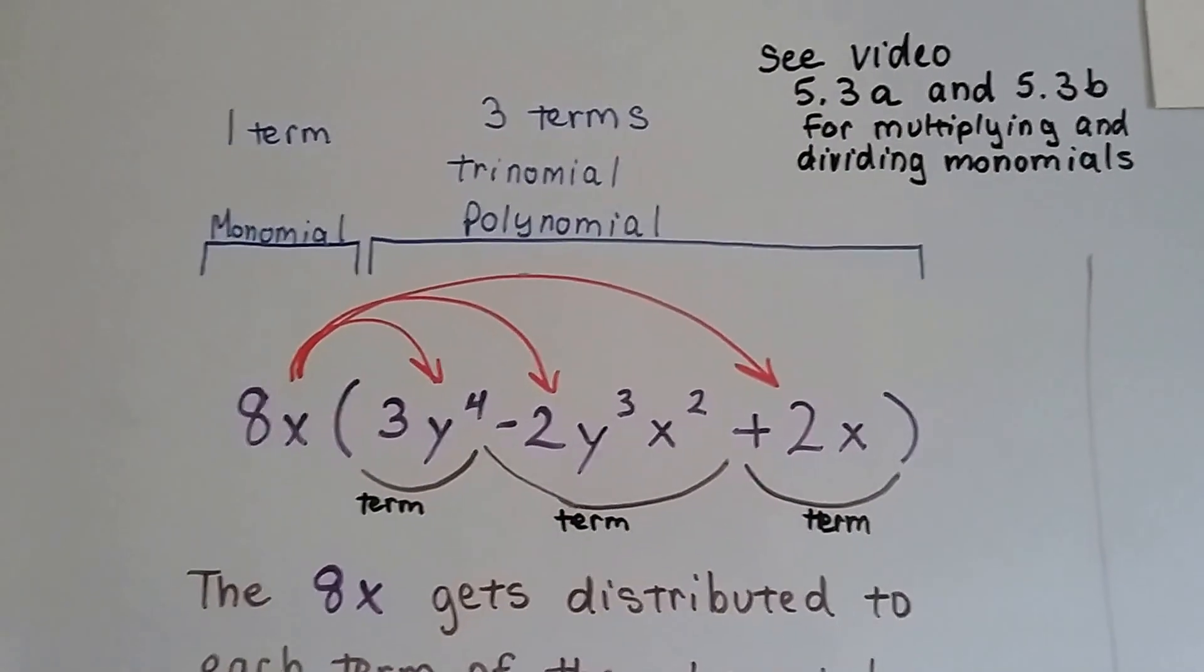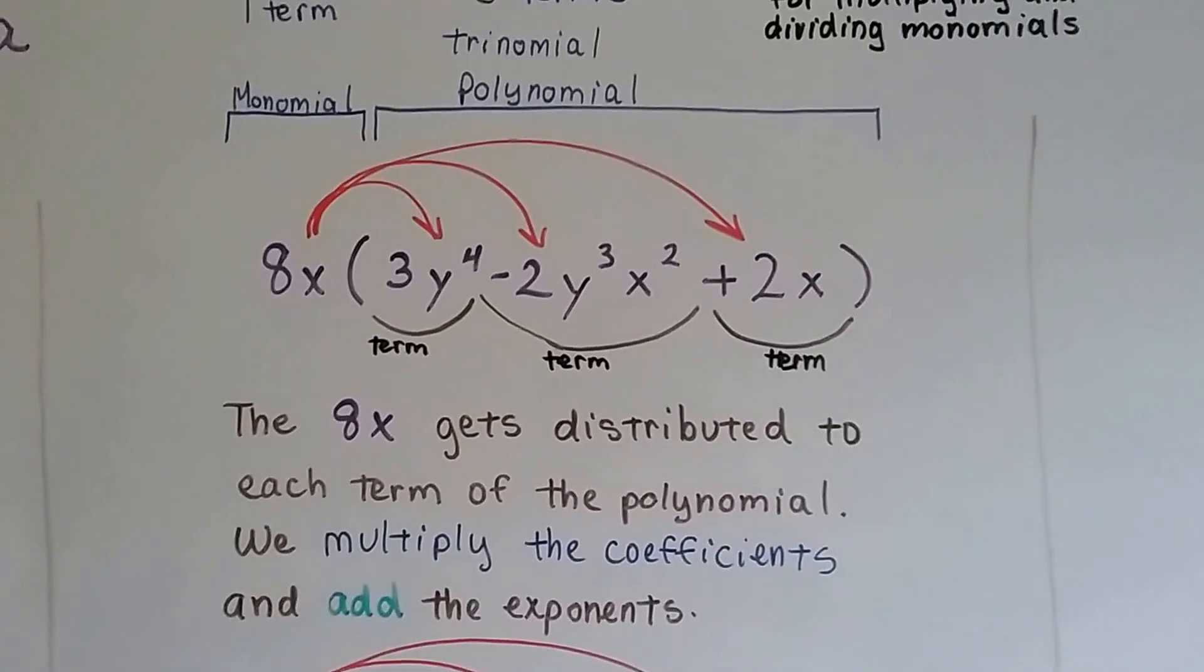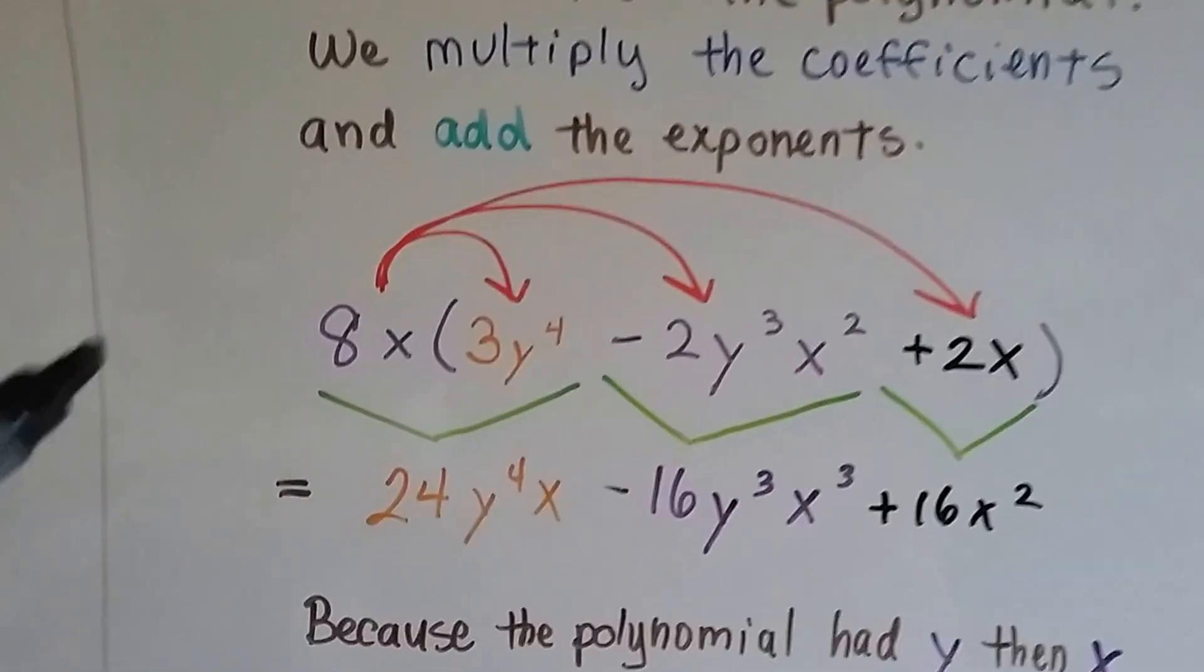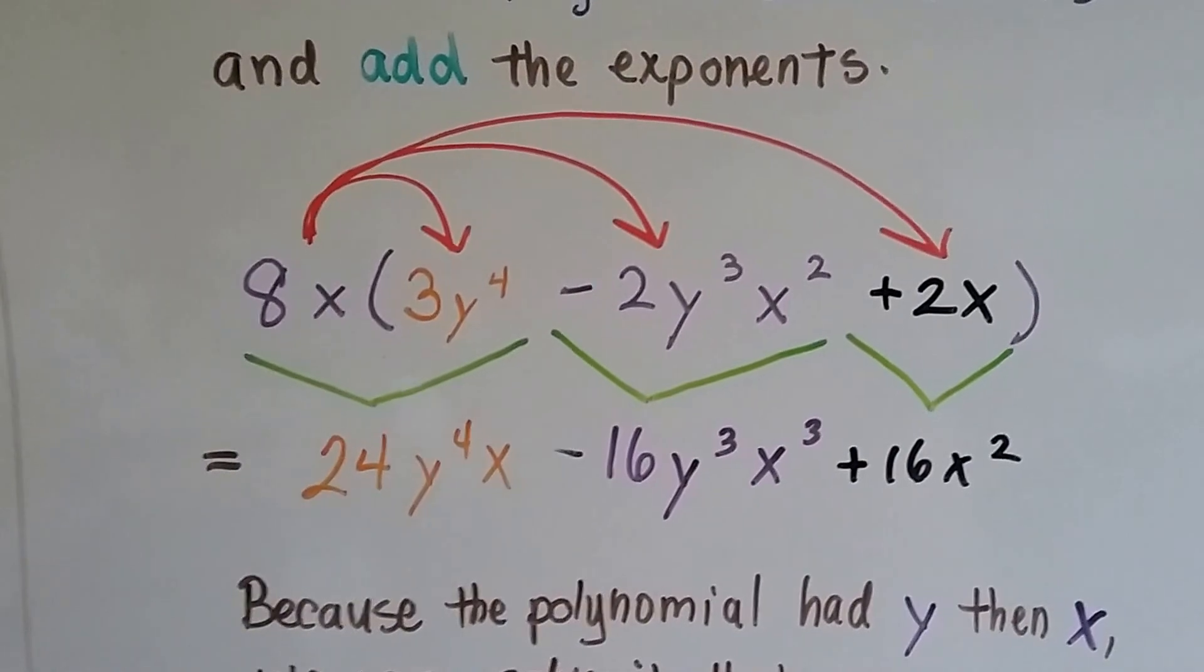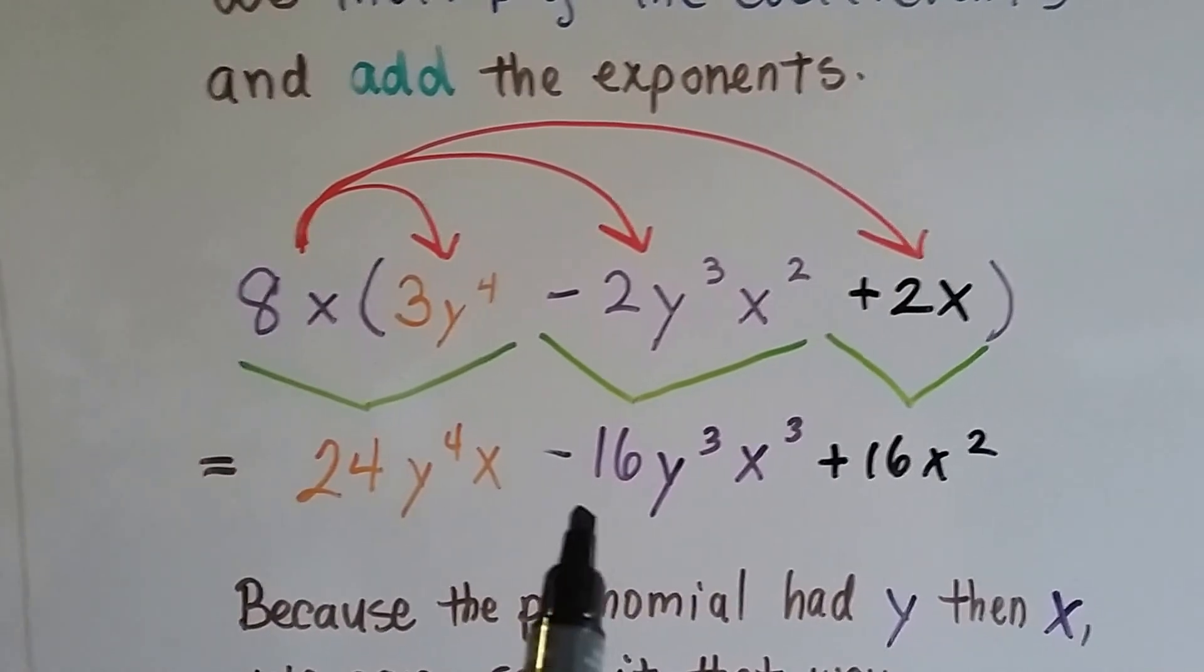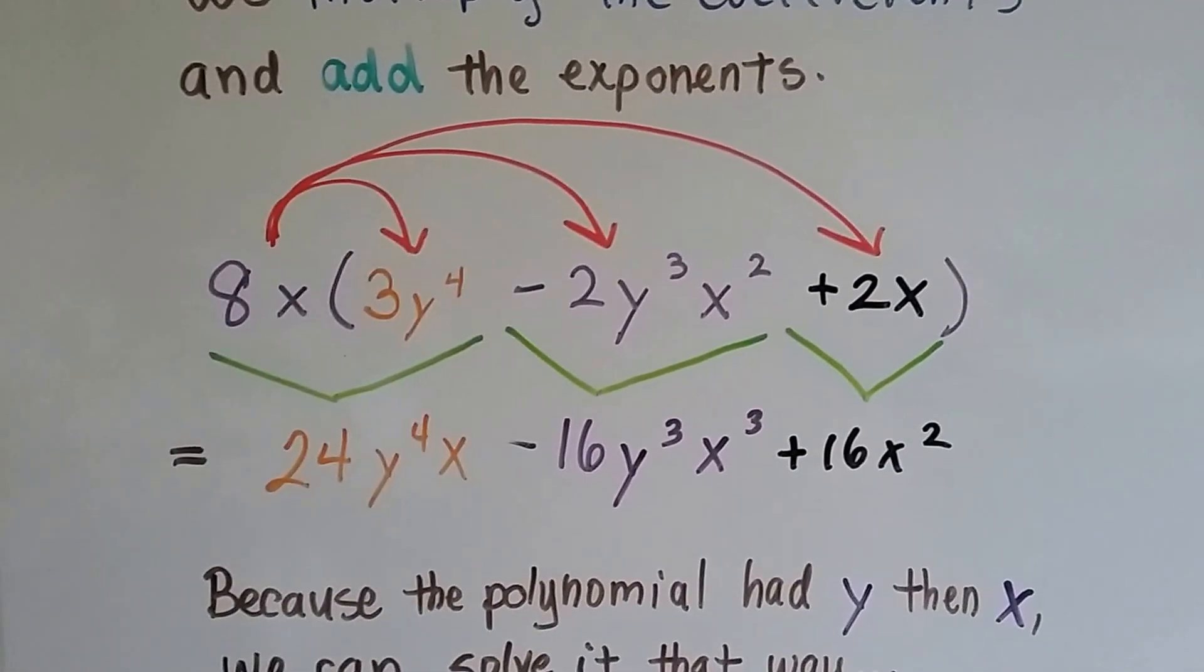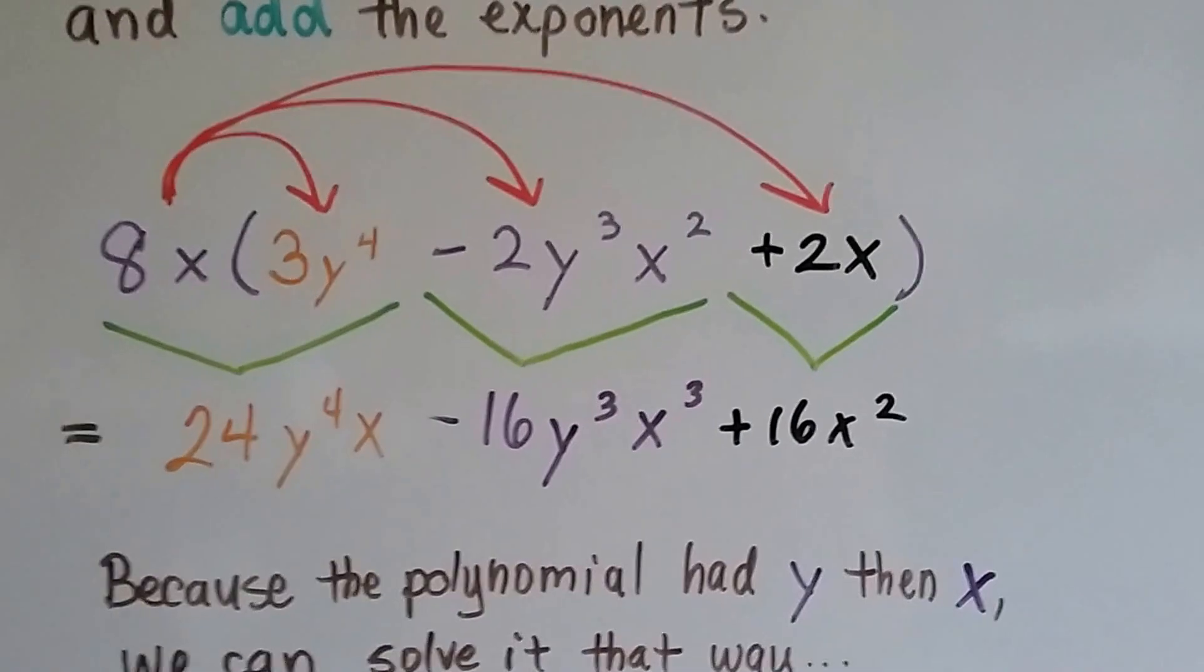So what we're going to do is just distribute this 8x. It gets distributed to each term of the polynomial. We multiply the coefficients and add the exponents. So we would do 8x times 3y to the 4th. So 8x times 3y to the 4th gives us 24y to the 4th x. And 8x times negative 2y to the 3rd x squared gives us negative 16y to the 3rd x cubed, because there's an x here and x squared here, so we have x to the third. And 8x times 2x, well, 8 times 2 is 16. And this x and this x make x squared.